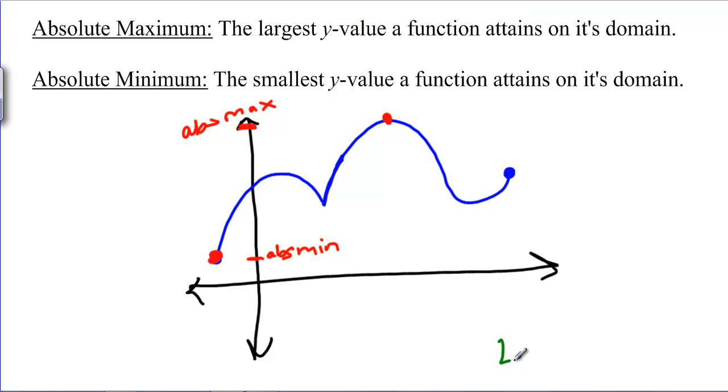Now, local maximums and minimums are a little bit harder to define. A local maximum is a place where the graph is highest for all the points nearby. This right here is a local maximum and this right here is a local maximum.